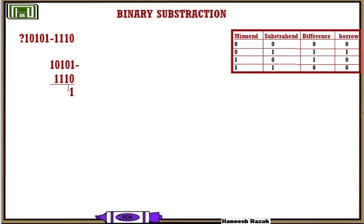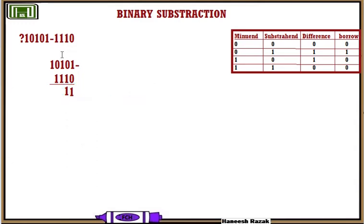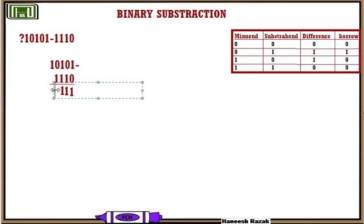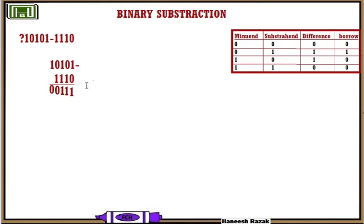There is a borrow. So 0 minus 1 with borrow: write 1 as the borrow propagates. The answer for that column is 1. Then 1 borrow is also present in the next column: 1 minus 1 minus 1 borrow gives 0, but we have a borrow, so we write 1 for the borrow. Next: 0 minus 1 with borrow is 0, borrow carries. Then 1 minus 1 borrow is 0. The final answer is 0,0,1,1,1 in base 2.